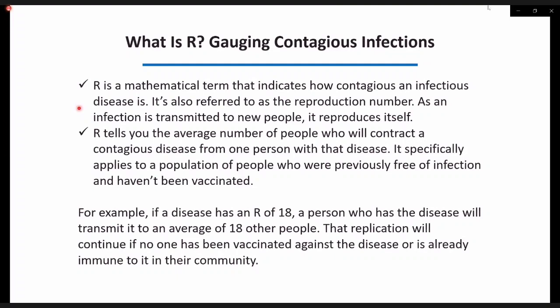As an infection is transmitted to new people, it reproduces itself. R tells you the average number of people who will contract a contagious disease from one person with that disease. It also applies to a population of people who were previously free of infection and have not been vaccinated. For example, if a disease has an R of 18, a person who has the disease will transmit it to an average of 18 other individuals. That replication will continue if no one has been vaccinated against the disease or is already immune in their community.